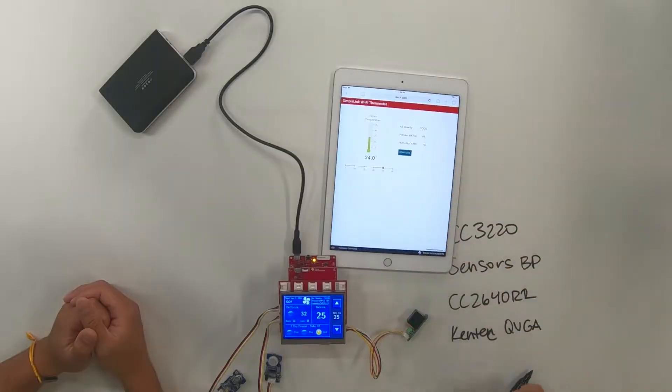So we can change the temperature on the screen, or we can change it on the GUI that's connected up to the cloud. Oh, wow. And that was really fast. And I guess that's a benefit of MQTT. Absolutely.